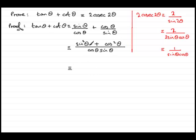Now you should recognize what the top is. Sine² θ plus cos² θ, well known identity, always comes to one. So you've got one over cos θ sine θ.